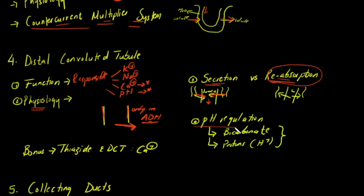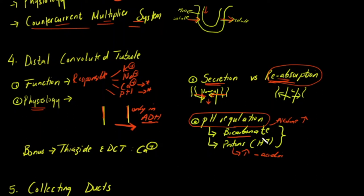How does the distal convoluted tubule manage pH regulation? Bicarbonate is essentially more alkaline, so more bicarbonate in the blood raises pH, while protons make it more acidic. By adjusting secretion and reabsorption, pH can be regulated — for example, if blood is very acidic, you secrete more H+ into the lumen and reabsorb more bicarbonate to balance pH. Also worth looking up: how thiazides cause hypercalciuria — or rather hypocalcemia — by their action on the distal convoluted tubule.